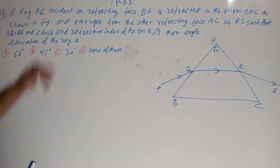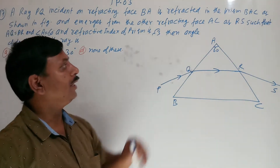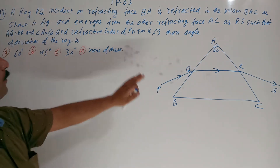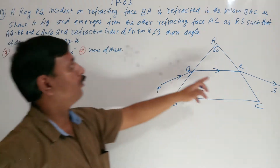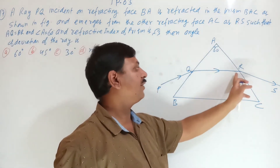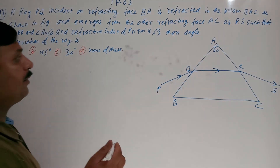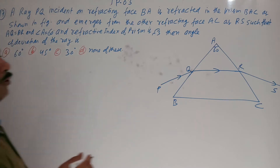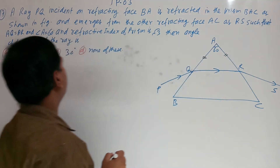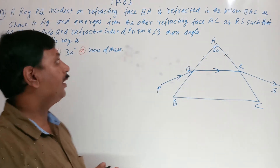Next problem: a ray PQ is incident on refracting face BA of a prism, refracted through BA, and emerges out from the other refracting surface AC as ray RS. It is given that AQ equals AR, and the refractive index of the material is root 3. Find the angle of deviation.